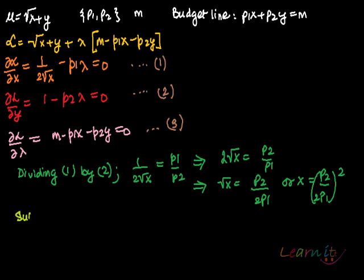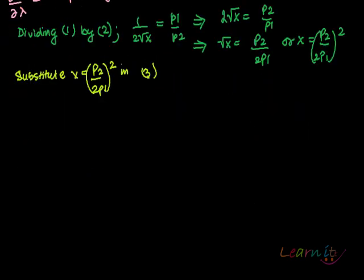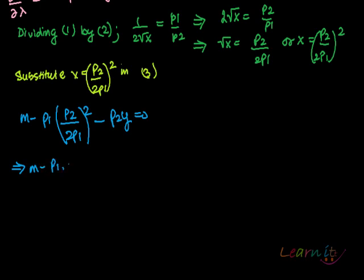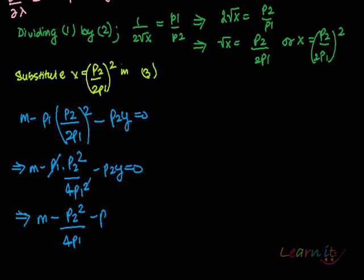Now substitute x equals P2 squared by 4P1 squared in three. What is it that you will get? You will be getting m minus P1 times P2 squared upon 4P1 squared minus P2y equals zero. Simplifying it, you will be getting m minus P2 squared upon 4P1 minus P2y equals zero.